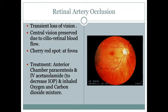Retinal artery occlusion presents with transient loss of vision, but central vision remains preserved because of extra blood supply from the cilioretinal artery. The diagnostic finding is cherry red spot at the fovea. Treatment includes anterior chamber paracentesis, IV acetazolamide to decrease intraocular pressure, inhaled oxygen-carbon dioxide mixture to cause vasodilation and dislodge the thrombus.